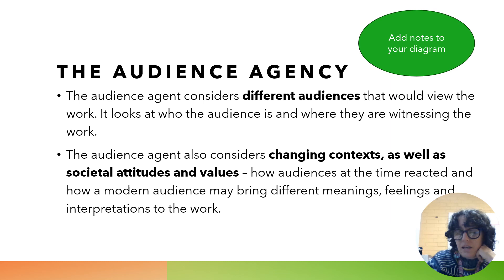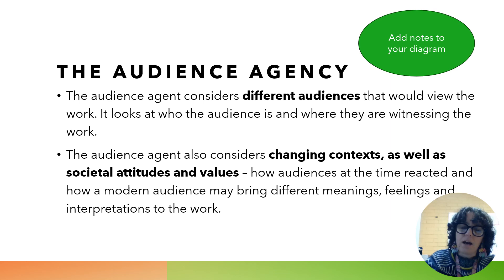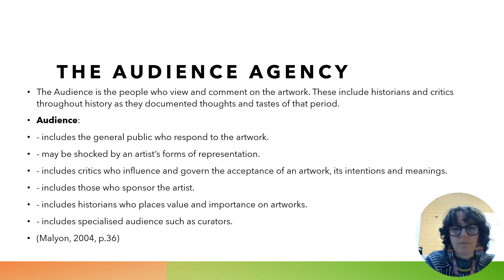A really good example would be any work by Van Gogh — he's possibly the most revered artist in the modern collective consciousness; every single person alive knows who Van Gogh is. Yet at the time of his life, he was regarded as being untalented. People didn't like his work; he never exhibited and he barely sold any — I think one in his lifetime. So we can look at why audiences reacted like that at the time, why we love him so much now, and what has changed in that time.